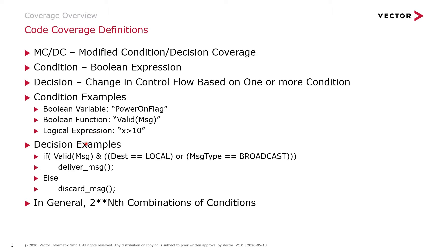Here we have a decision example — this is a routing one. So if the message is valid and the destination is local, or the message type equals broadcast, deliver the message, or else discard it. In general, there can be two to the nth combination of conditions. So for this example, we're going to have eight possible combinations of conditions because we have three conditions.